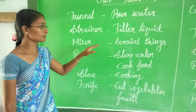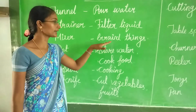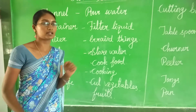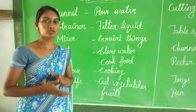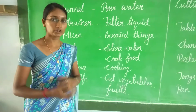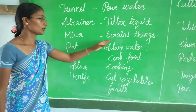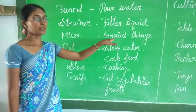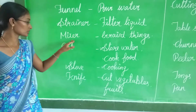Next, mixer. Mixer is what we use to grind things. We can use it for chutney as well as other ingredients. Mixer is what we use.